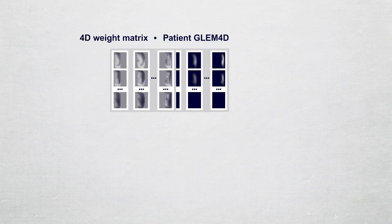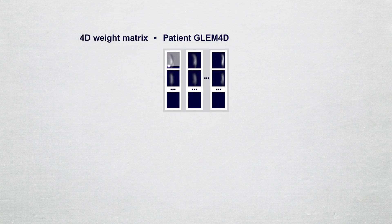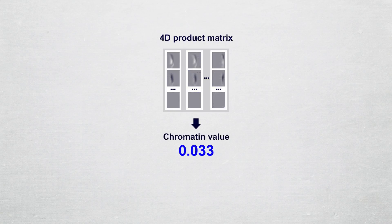We can now apply the 4D weight matrix by multiplying it with the GLEM4D, and the sum of the elements yields the chromatin value.